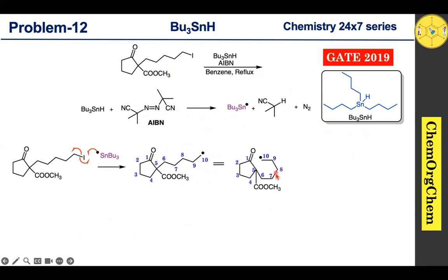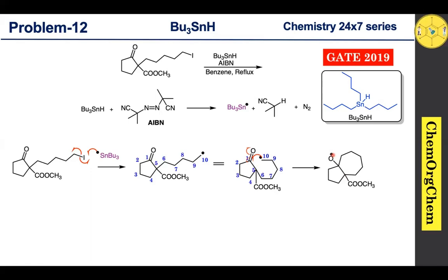This carbon-centered radical now attacks the carbonyl carbon, producing a new oxygen-centered radical intermediate. In this intermediate, the carbon-carbon bond is weak due to the electron-withdrawing group on that side. Therefore, the oxygen-centered radical undergoes homolytic cleavage of this carbon-carbon bond to produce a new carbon-centered radical.